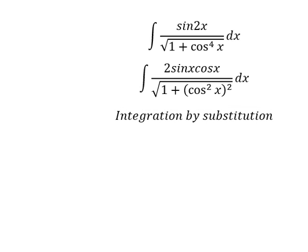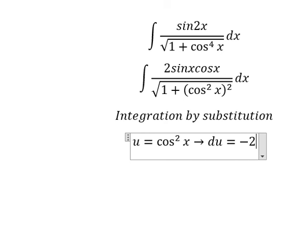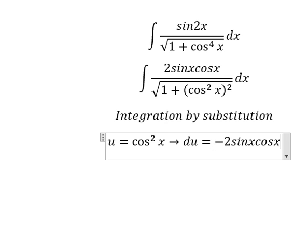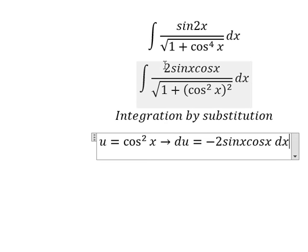I will let u equal cos²x. Then we take the first derivative for both sides, and we have du equals -2 sin x cos x dx. Since we don't have the negative sign in the numerator,